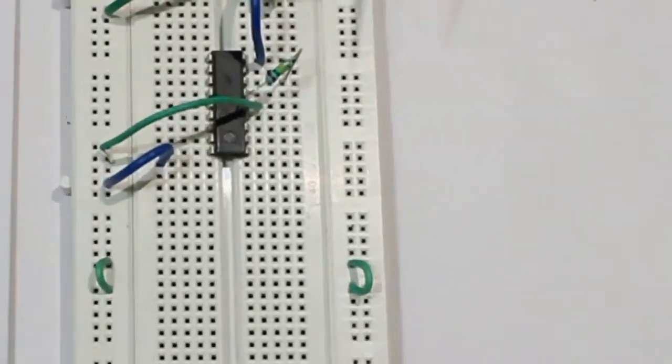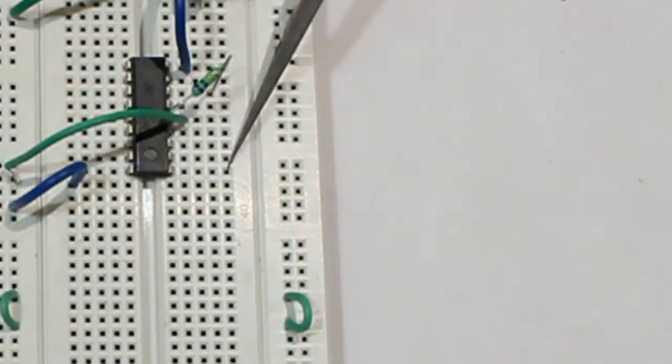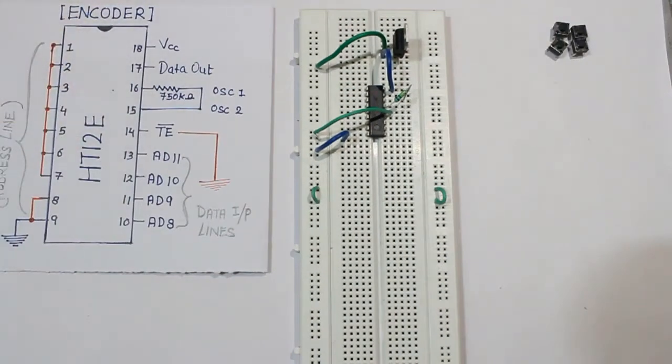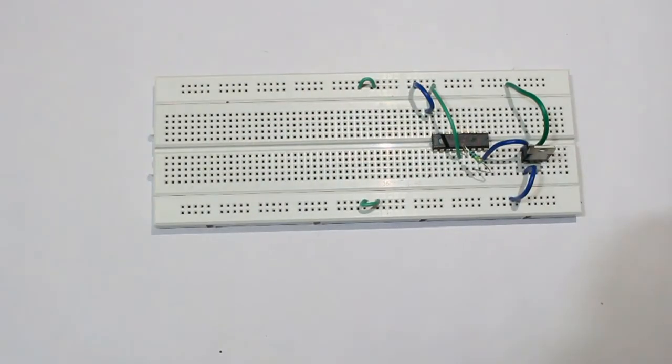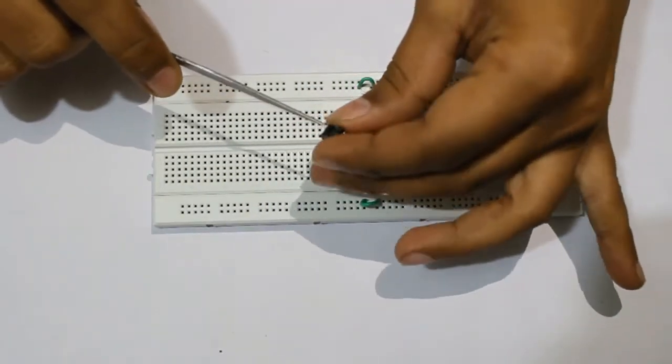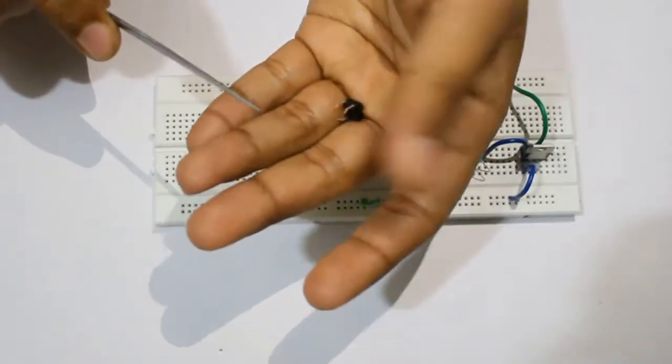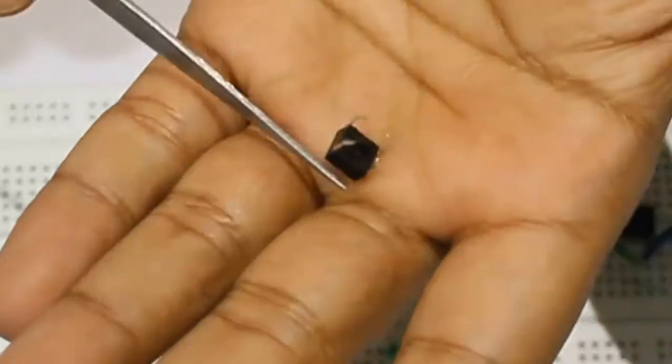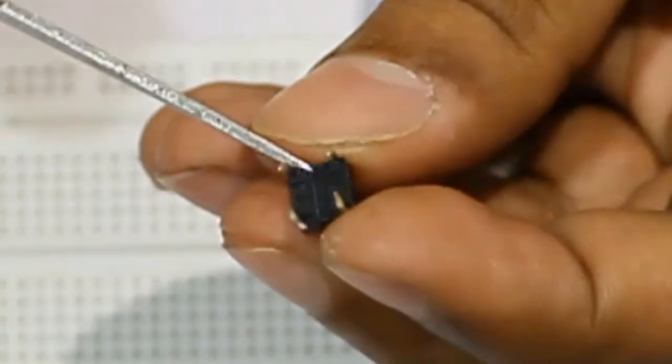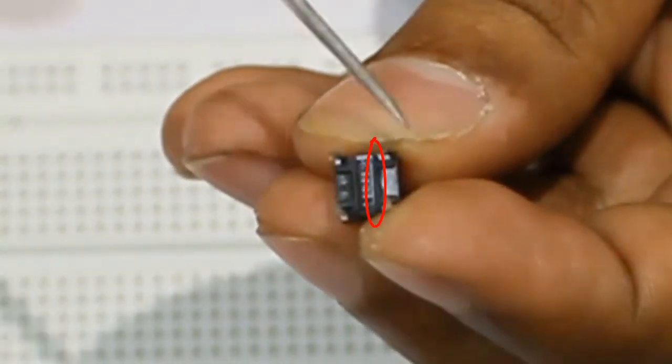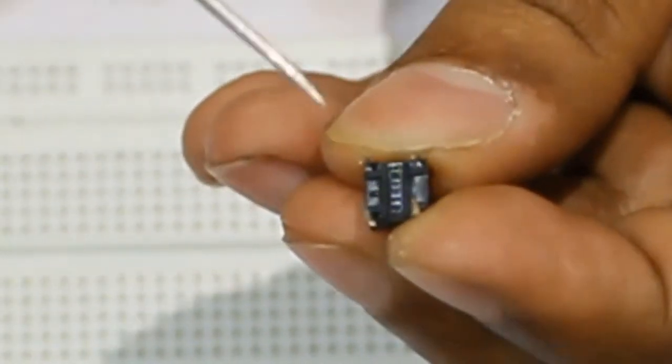Now my 13th to 10th pin, you can see here is my data input. So to take a data input I can place my push button as an input. This is a push button you can see here. These are four leg push buttons in which two are shorted to each other. And these two are shorted, but these two are not shorted to each other.